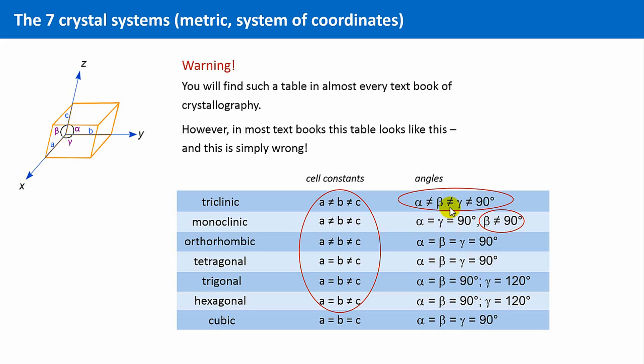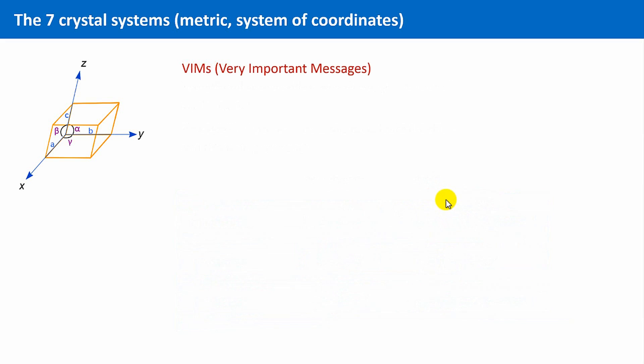Let us summarize this, as this is really, really important. I therefore call the following statements, VIMs, very important messages. The cell parameters give only an indication of the underlying symmetry of the unit cell. It is not the metric which determines the symmetry.